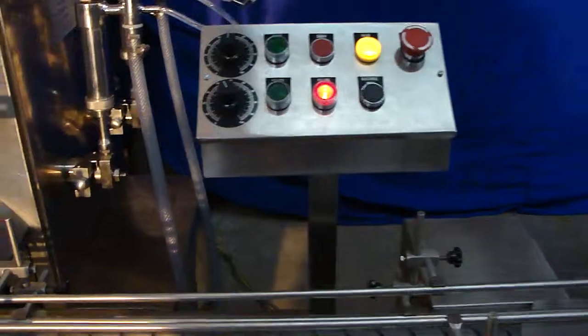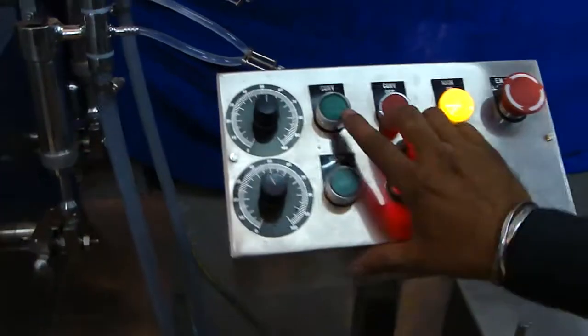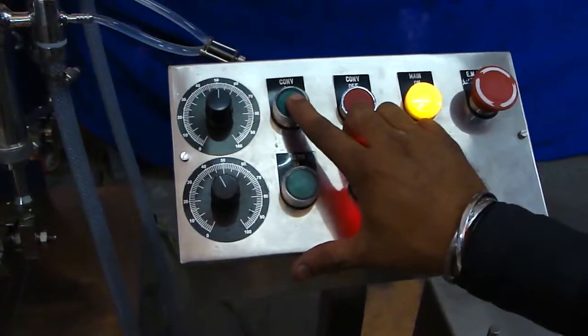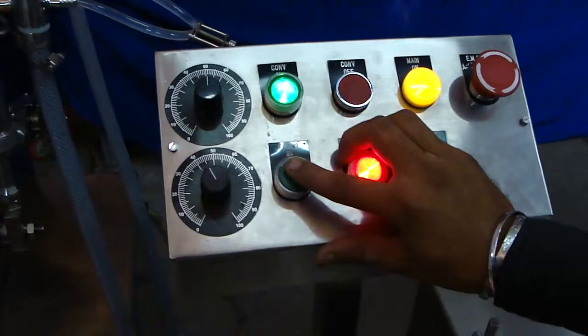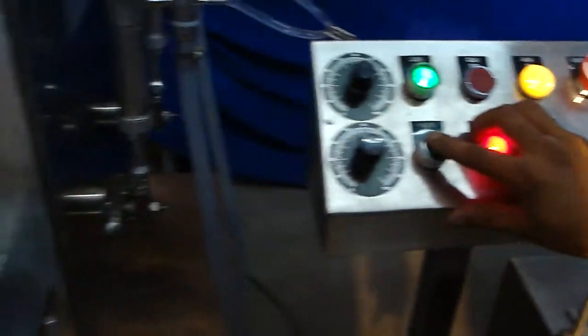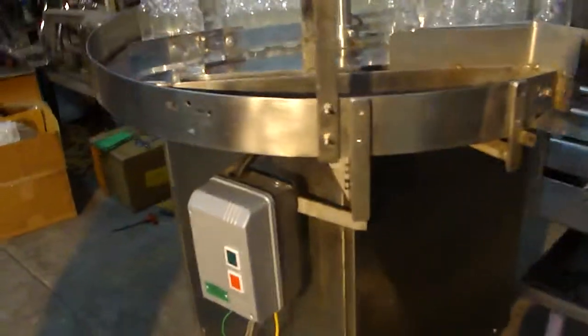After which we will go over here for the control panel of filling machine. We will turn on the conveyor. Now we will turn on the filling. After which we will turn on the turntable.